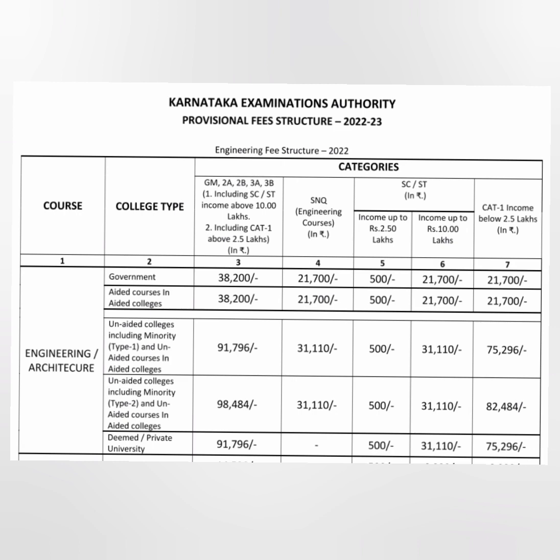The first row shows the type of college. The college types are government, aided, and then unaided — which is a private college. Within unaided private colleges, there are type 1 and type 2. And the last one is the deemed or private university. So these are the fee structures for different college types.